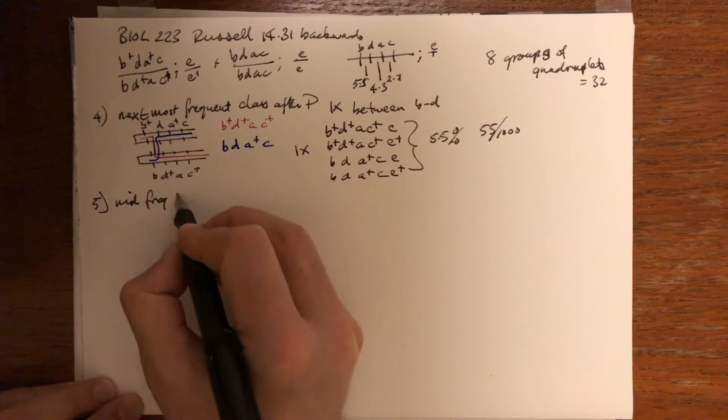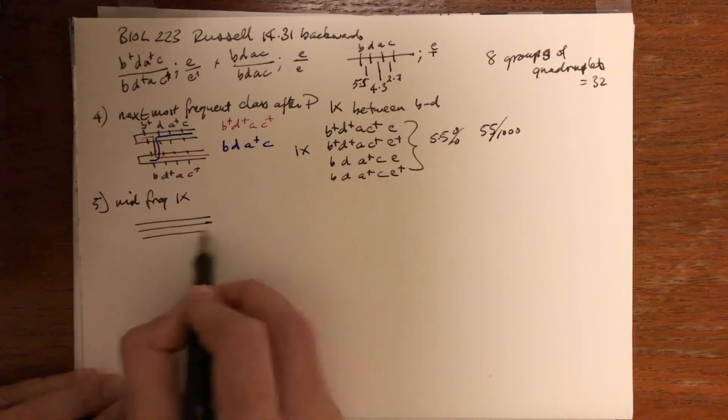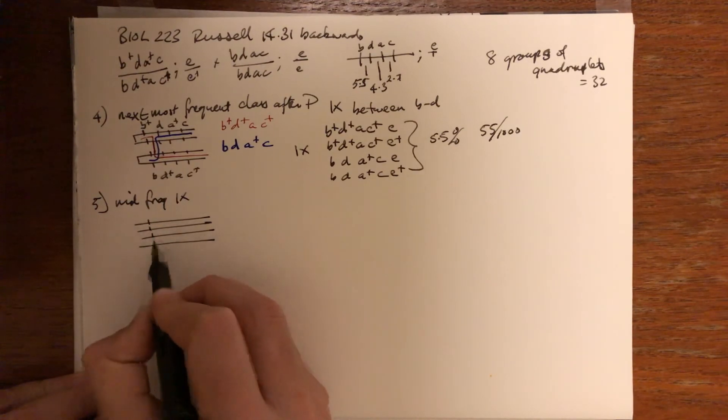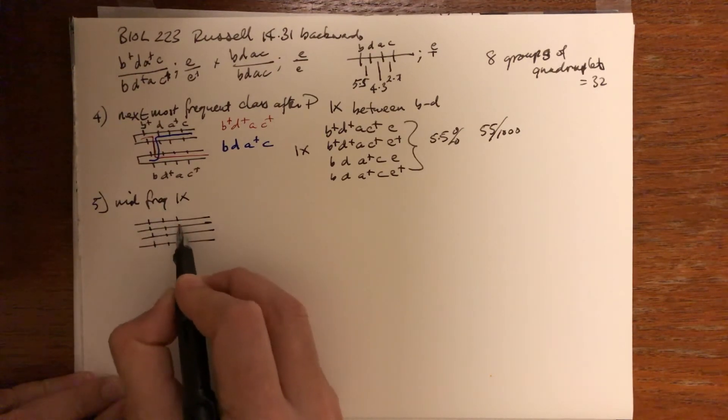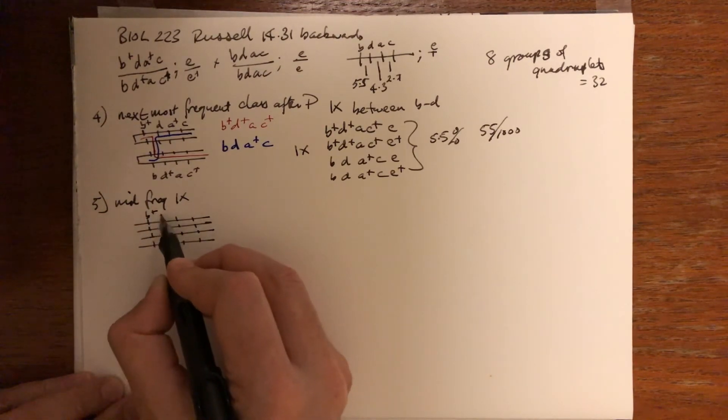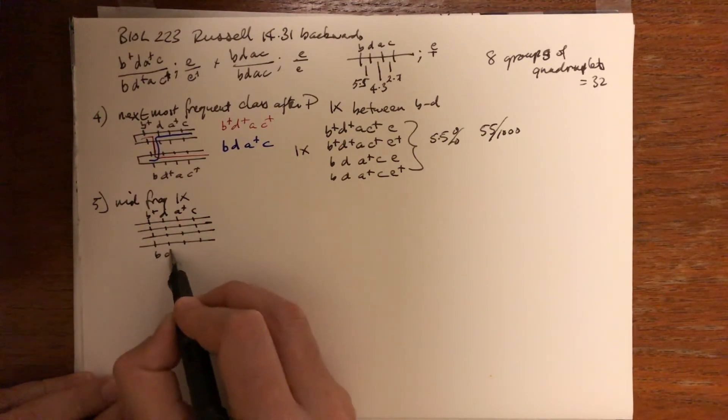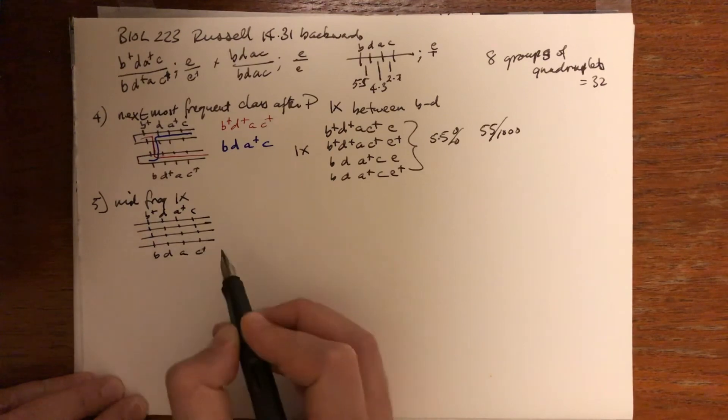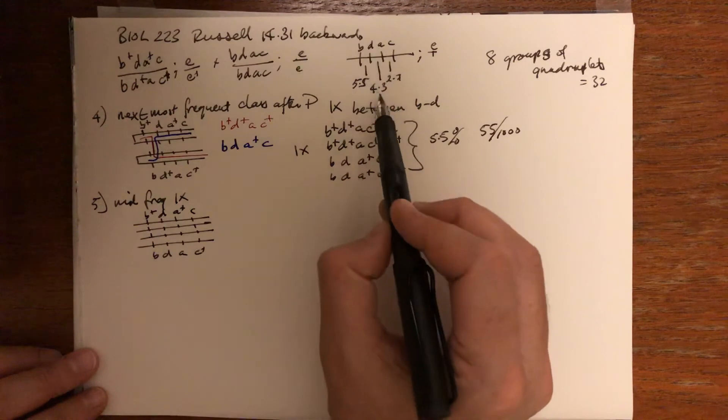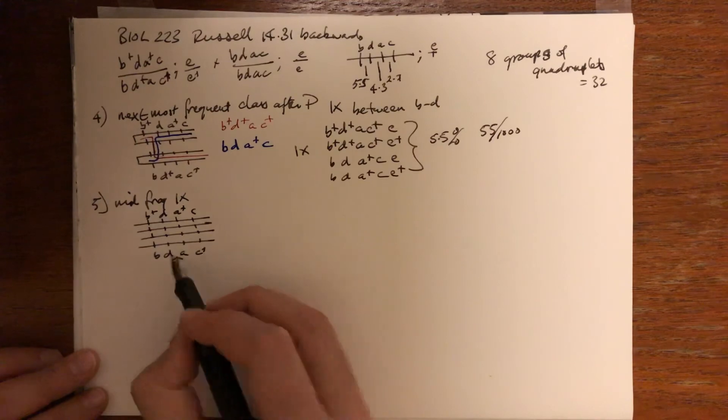The mid-frequent single crossing over we can determine the same way. Let's draw the four-strand stage and consider the parent with her genotype B D A+ C. The next most frequent class is going to be recombination between D and A because it's 4.3.